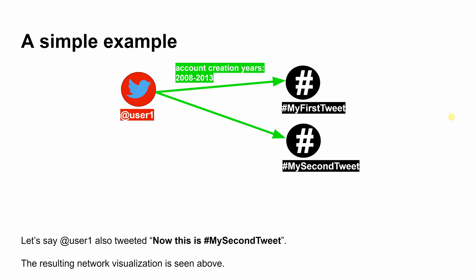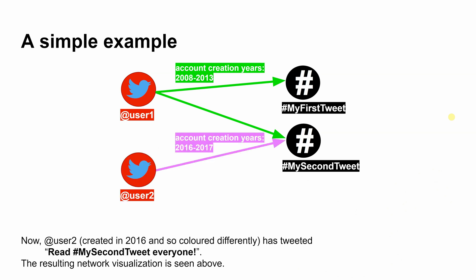Let's say user1 also tweeted: "now this is my second tweet." The resulting network visualization is seen above. Now user2, created in 2016 and so colored differently, has tweeted: "read my second tweet, everyone." The resulting network visualization is seen above.